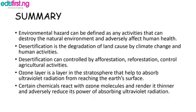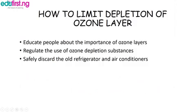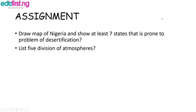Let's look at the assignment. The assignment is: draw a map of Nigeria and show at least seven states that are prone to the problem of desertification. Also, list the five divisions of the atmosphere. Thank you for listening.